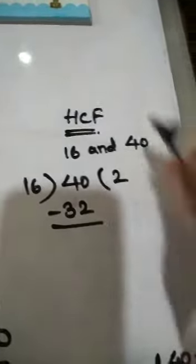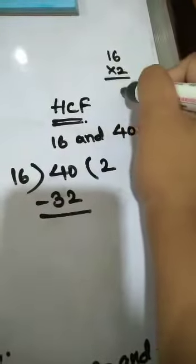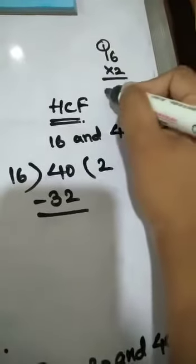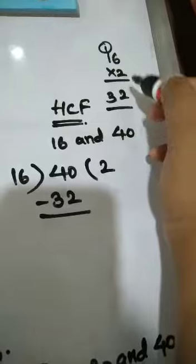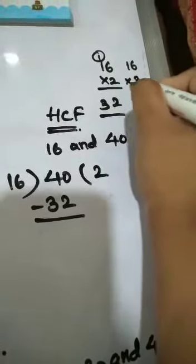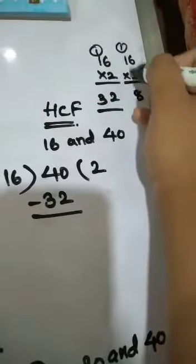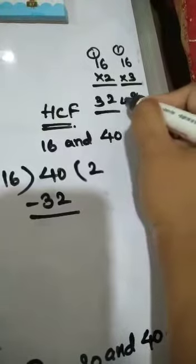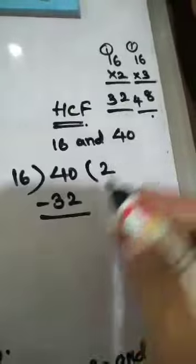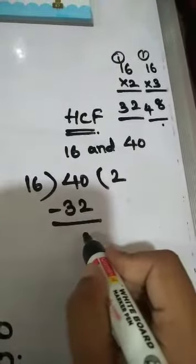If you don't know, you have to multiply like this: 16 into 2 — 6 twos are 12, write 2 carry 1; 2 ones are 2 plus 1 equals 3, so 16 twos are 32. We check that 16 threes are 48, which is too large, so we only take 32. 40 minus 32 equals 8.